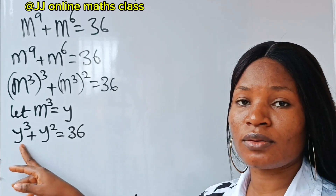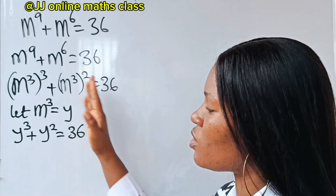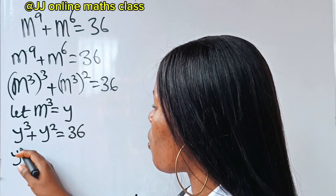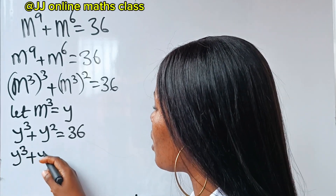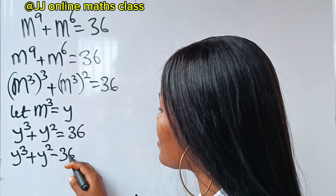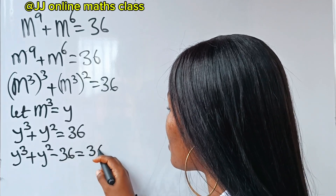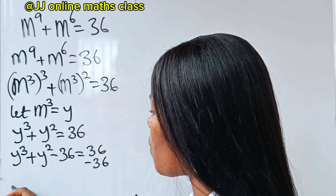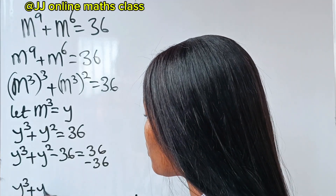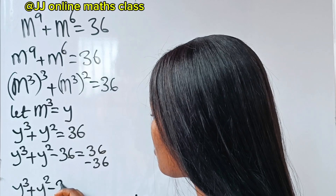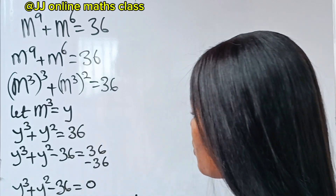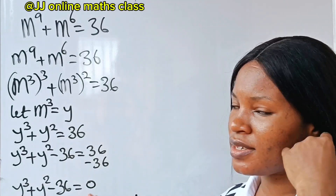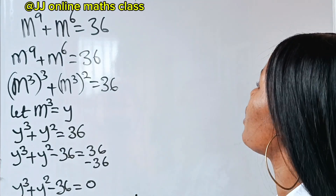Let's transfer the constant to the left-hand side. We have y to the power of 3 plus y squared minus 36 equals 0. This is a cubic polynomial, so we go ahead and factorize it.